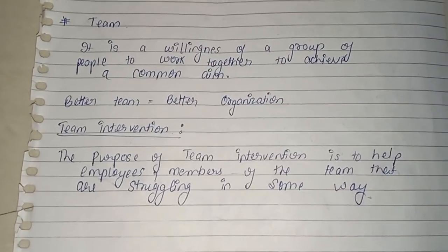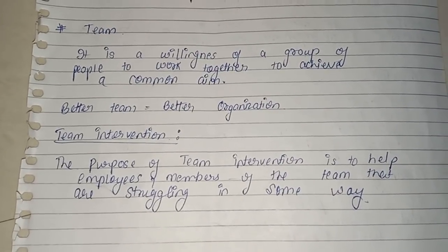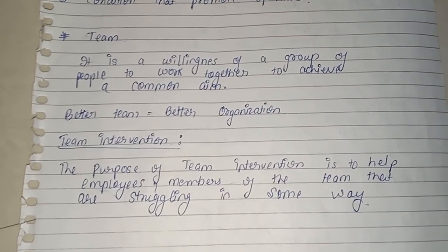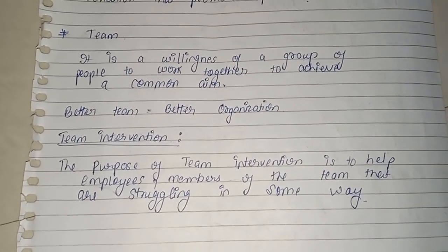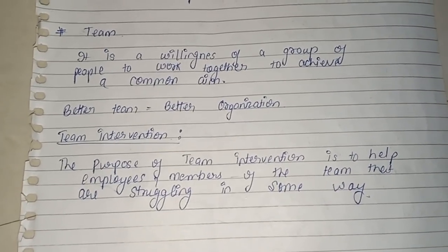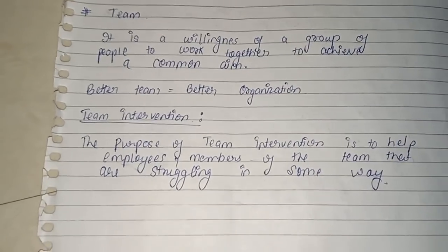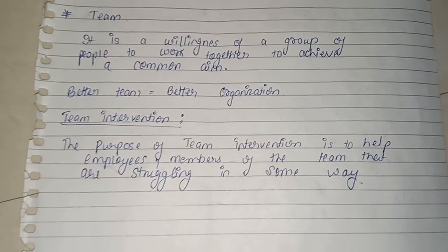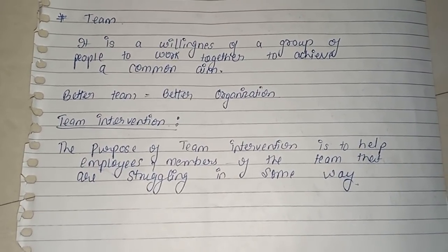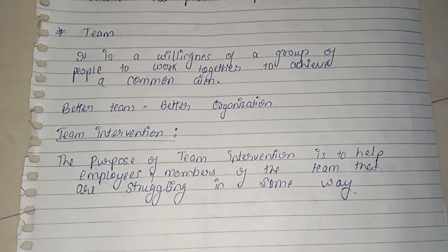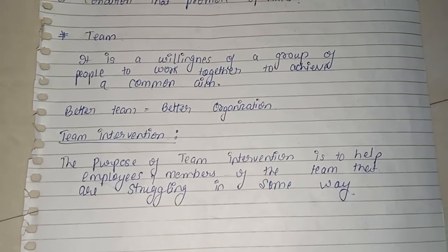The next topic is Team. A team is a willingness of a group of people to work together to achieve a common aim. The group we build voluntarily to achieve any common aim is called a team. Better team equals better organization — if any organization's team is good, the organization will also be good. Team intervention is about helping employees or members of the team who are struggling in some way within the organization.